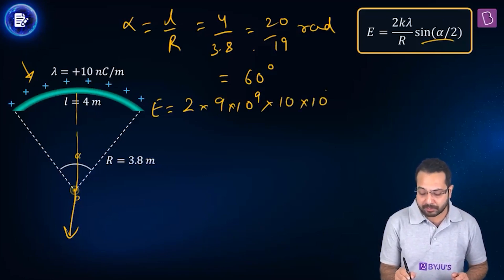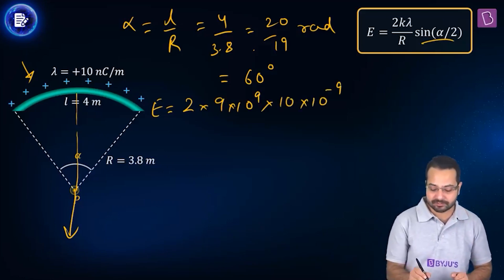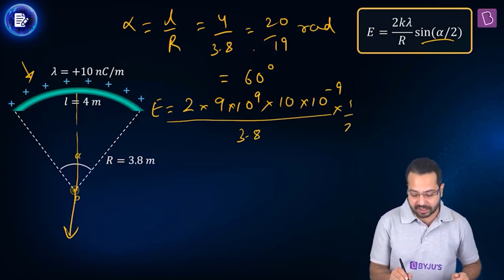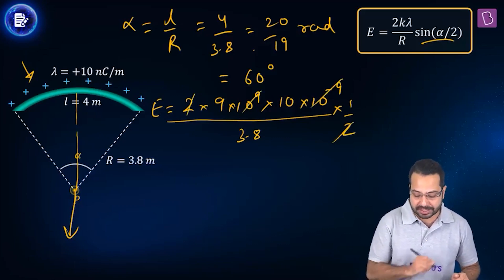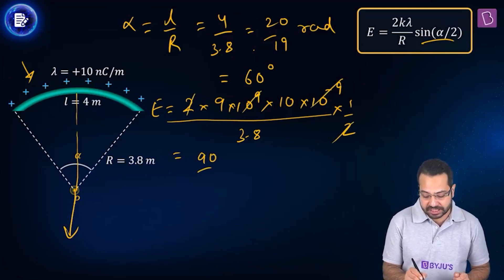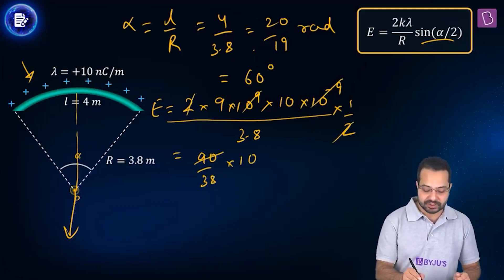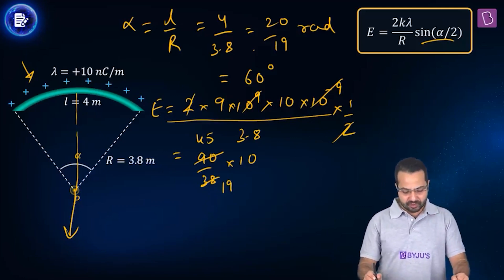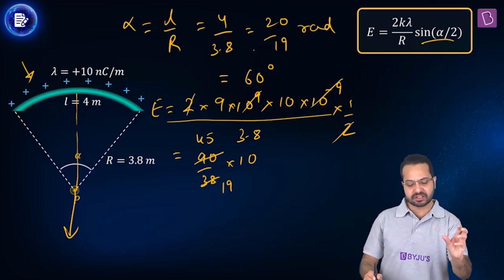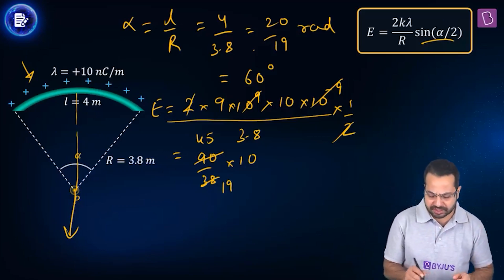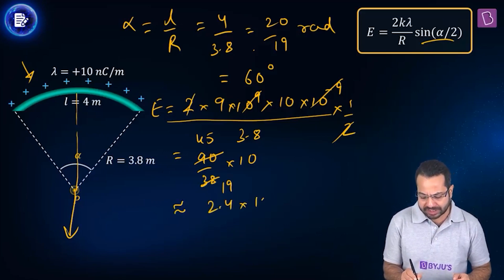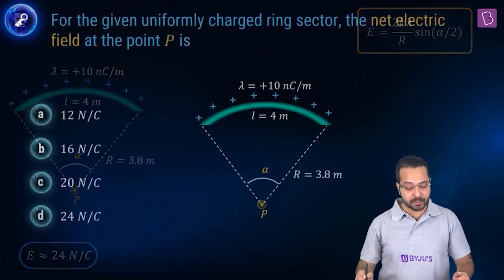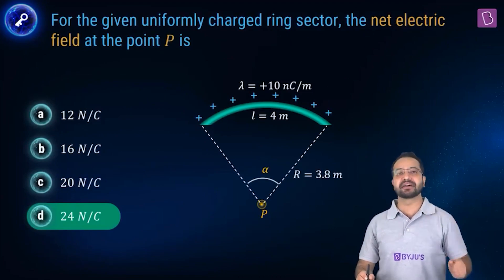Substituting: E = 2 × (9×10⁹) × (10×10⁻⁹) / 3.8 × sin(30°) = 180/3.8 × 0.5 = 90/3.8 ≈ 45/1.9 ≈ 24 N/C. Option D is correct.